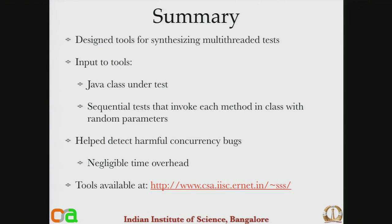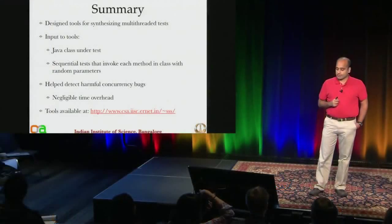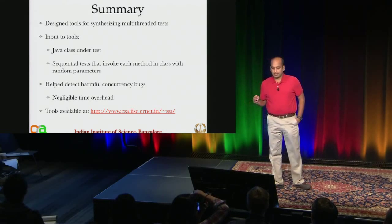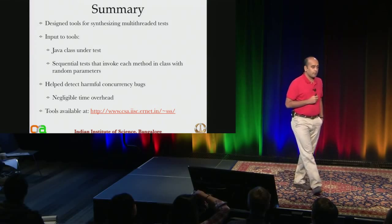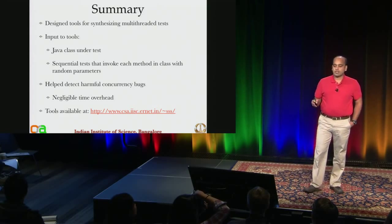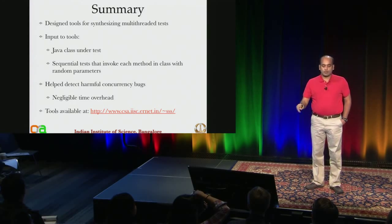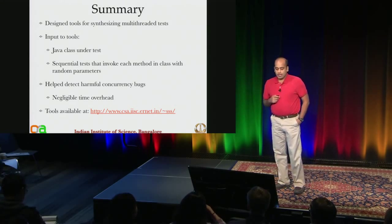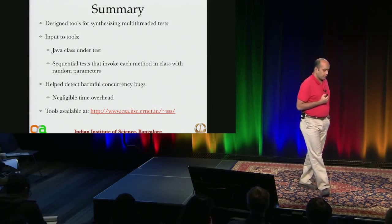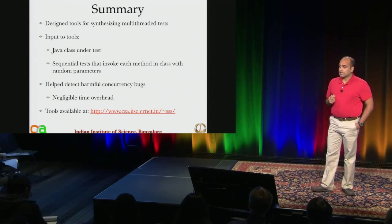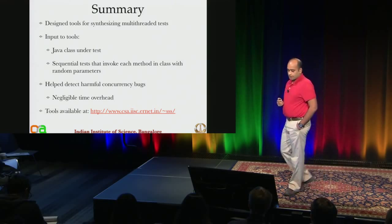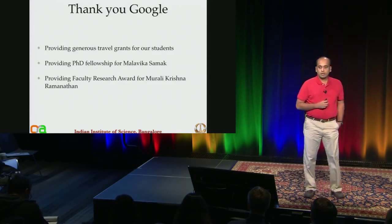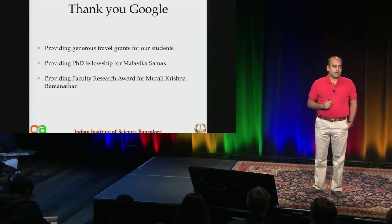In summary, we have designed tools for synthesizing multithreaded tests. The input requires the Java class and sequential tests that invoke each method with random parameters. These tools have been helpful in detecting harmful concurrency bugs with negligible time overhead. The tools are available at our web page. Thank you to Google for generously funding our research activities.